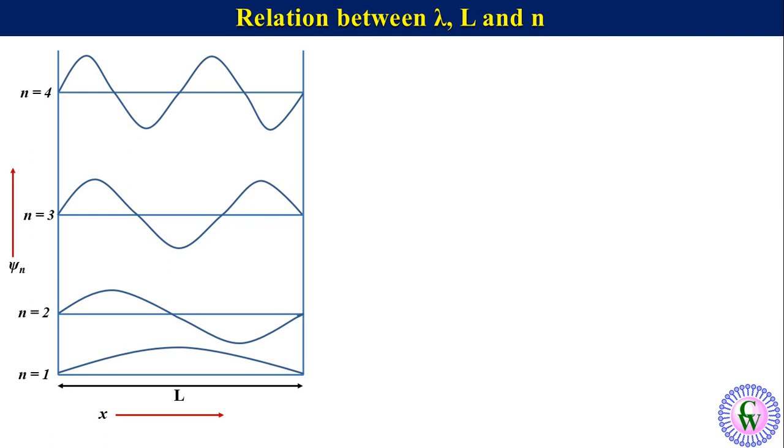Here, the number of nodes is equal to n minus 1. As we know that a wave consists of peaks and troughs, this is the wavelength lambda.